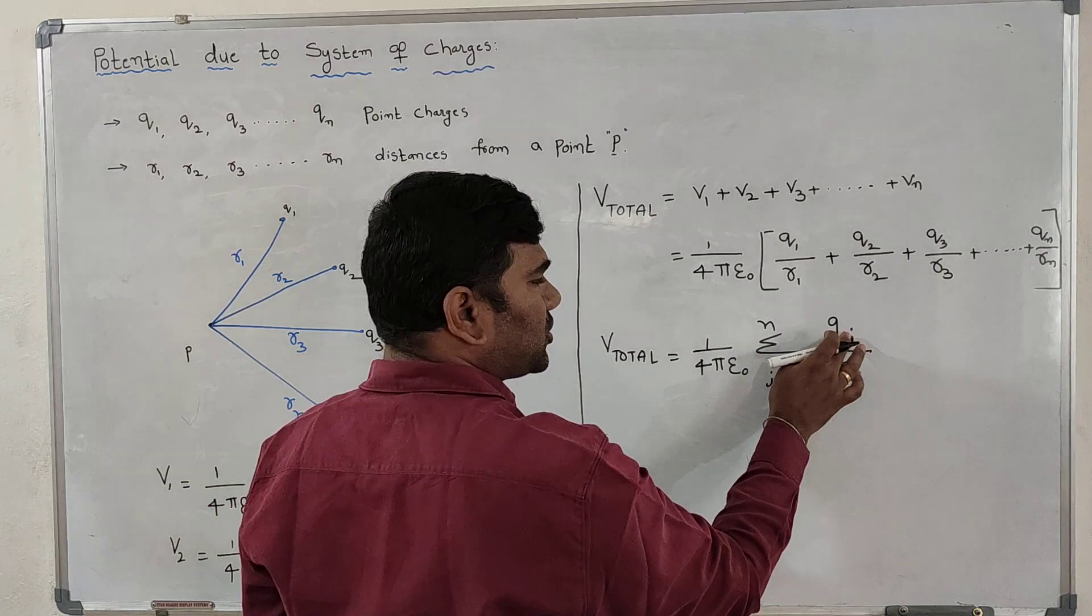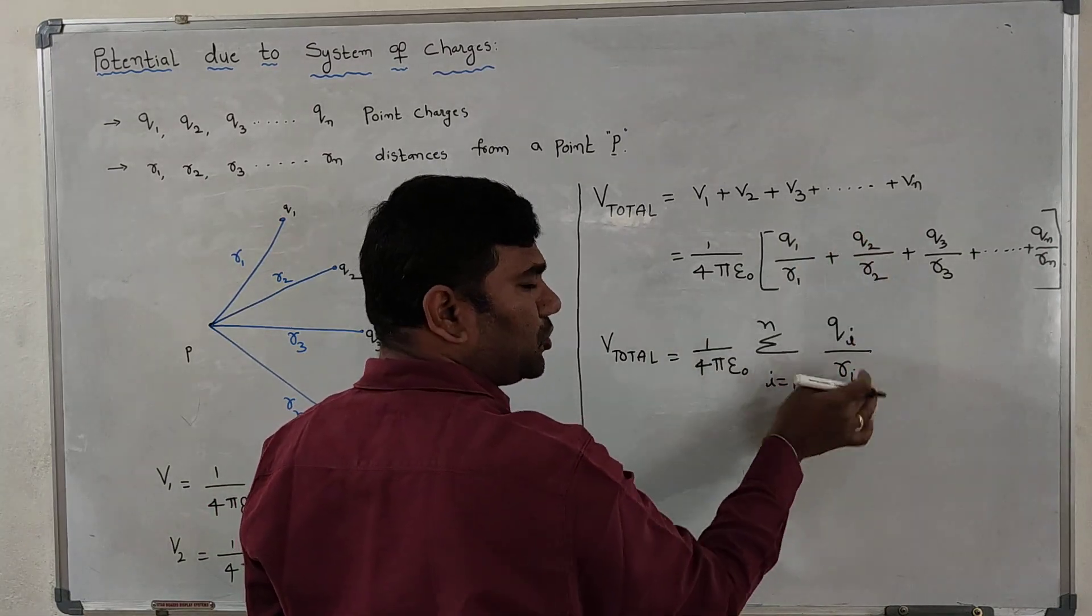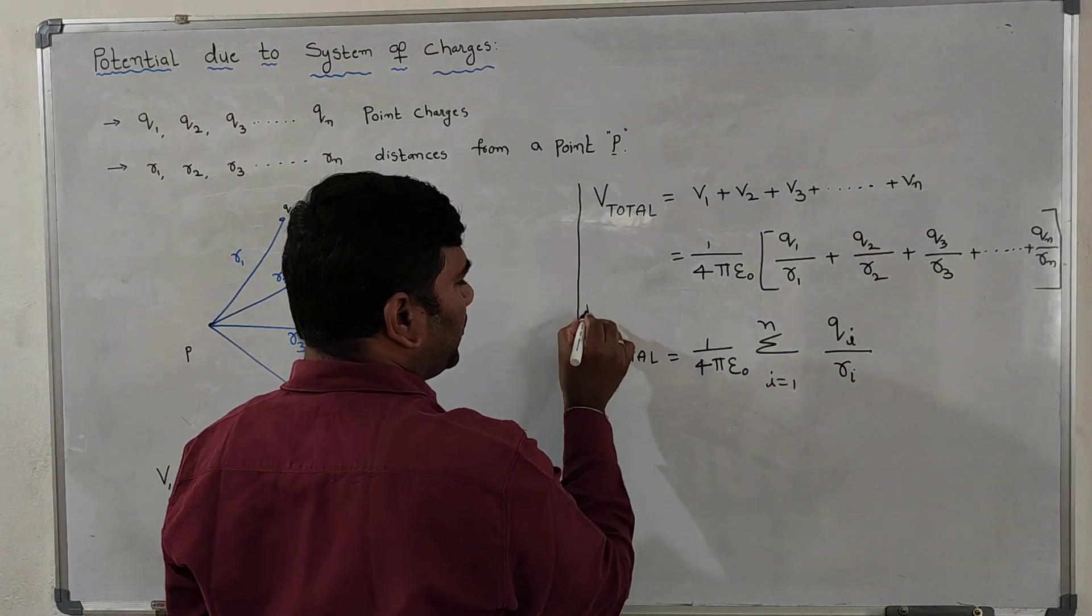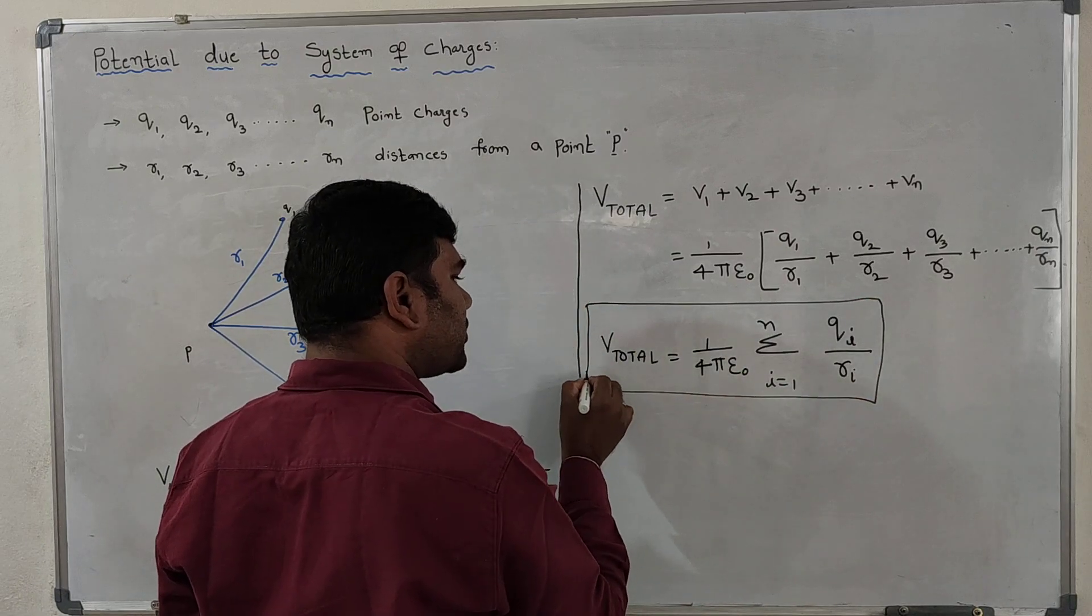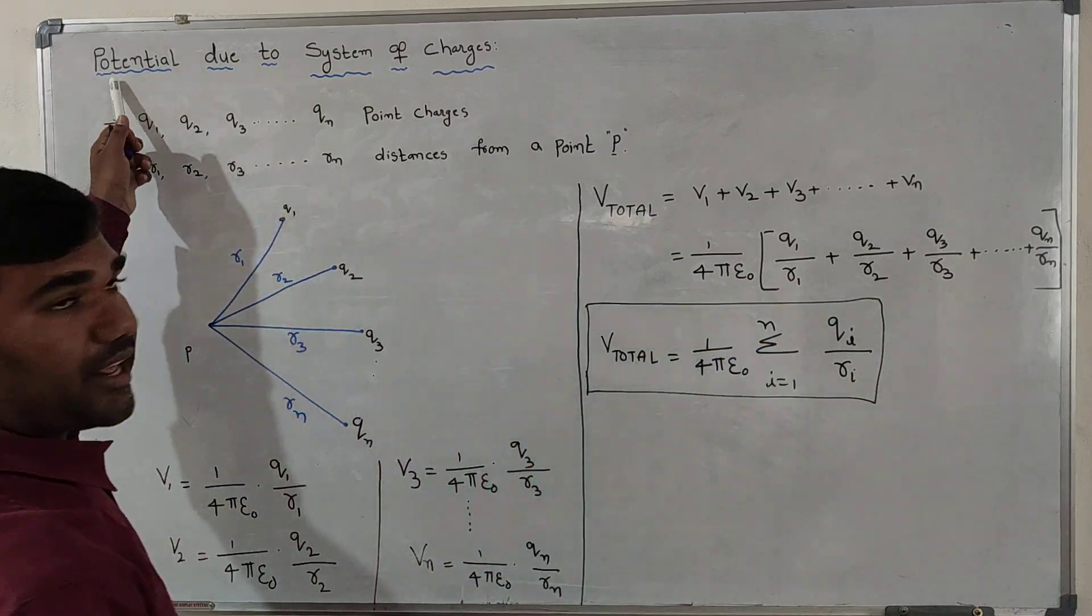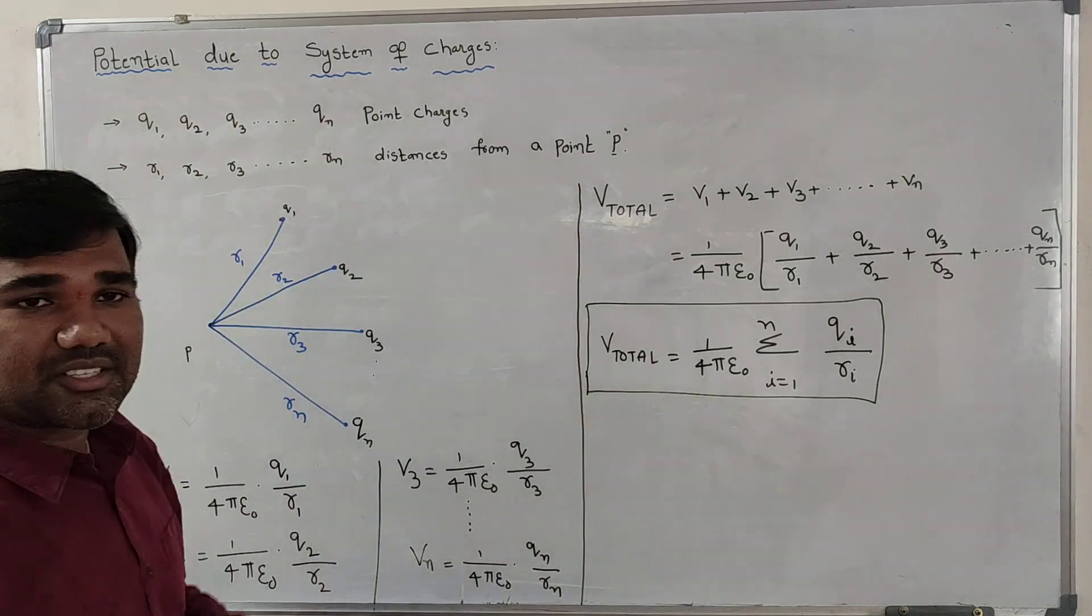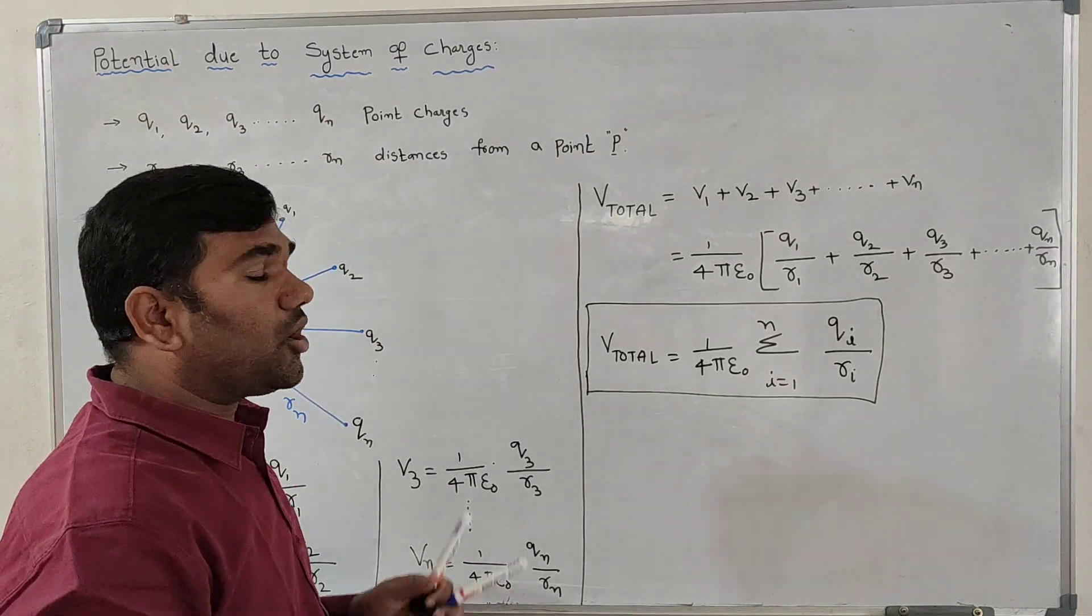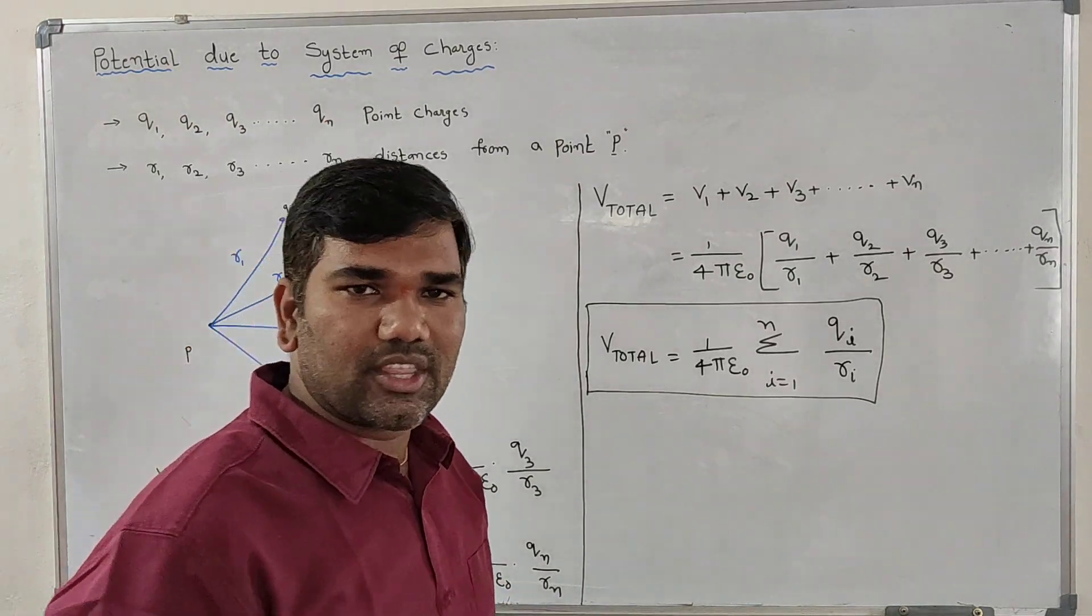Each time, this is Q1 by R1 plus Q2 by R2, and so on. Therefore we can rearrange like this, and this expression is said to be potential due to system of n charges, or system of charges. Thank you.